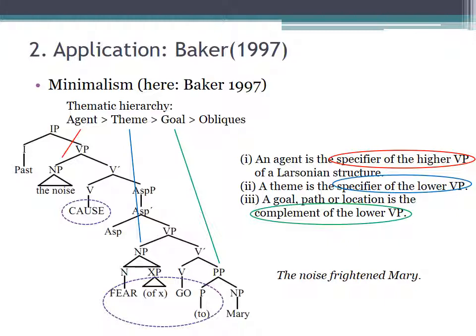The last example is Baker, which is also compatible with recent minimalist conceptions of argument structure. Again, the theory establishes a straightforward correspondence between arguments on the thematic hierarchy and fixed positions in the syntactic structure. The linking rules make no reference to the verb and the predicate.